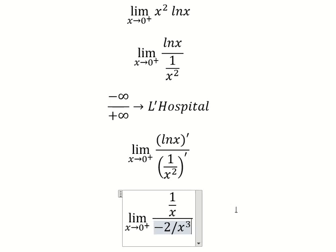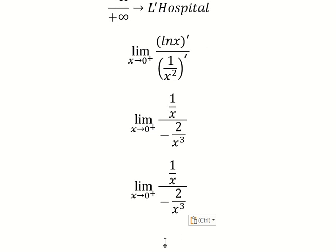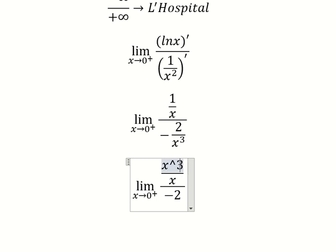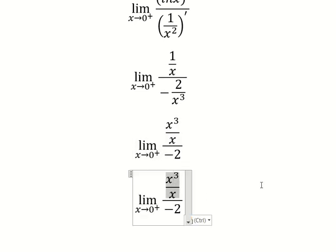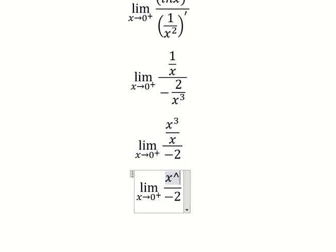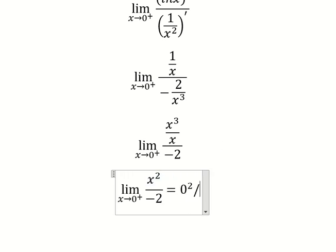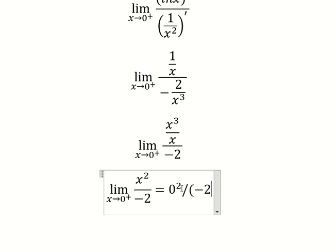Now we substitute these derivatives in. After simplifying, we have x³ over negative 2. Putting x equals zero in here, we get zero. This is the end. Thank you for watching.